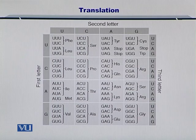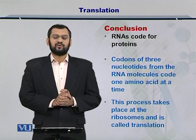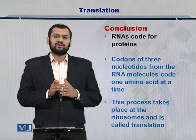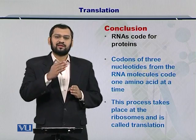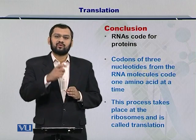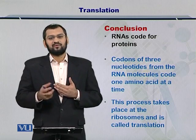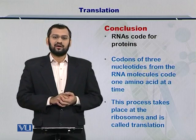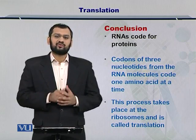So essentially, if you encounter AUG within an RNA molecule, then you know that methionine will be encoded by this codon. In conclusion, RNAs code for proteins; three nucleotides act at a time to code for one amino acid, and then the next three nucleotides or codon codes for another amino acid. You can look up this table to know which amino acid will be produced from a given RNA sequence. This process takes place at the ribosomes and is called translation.